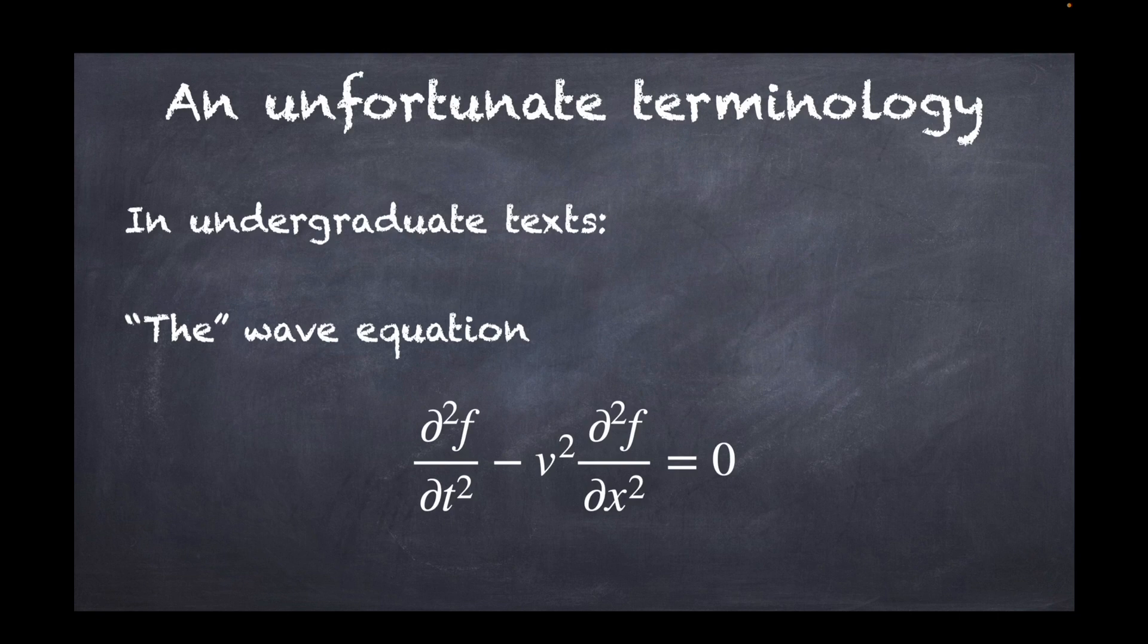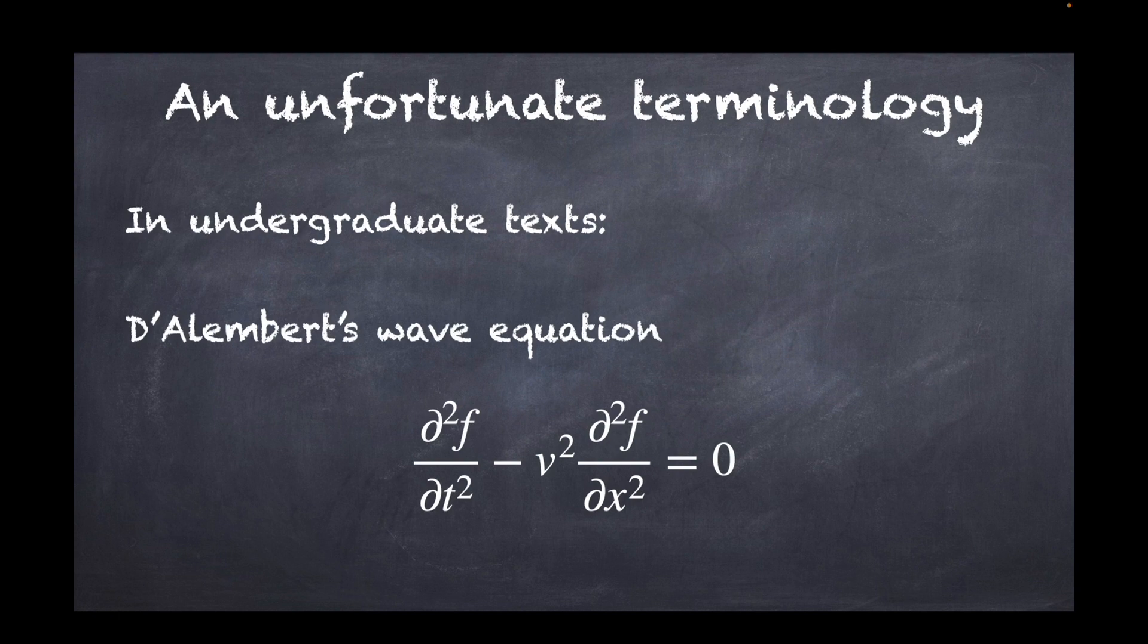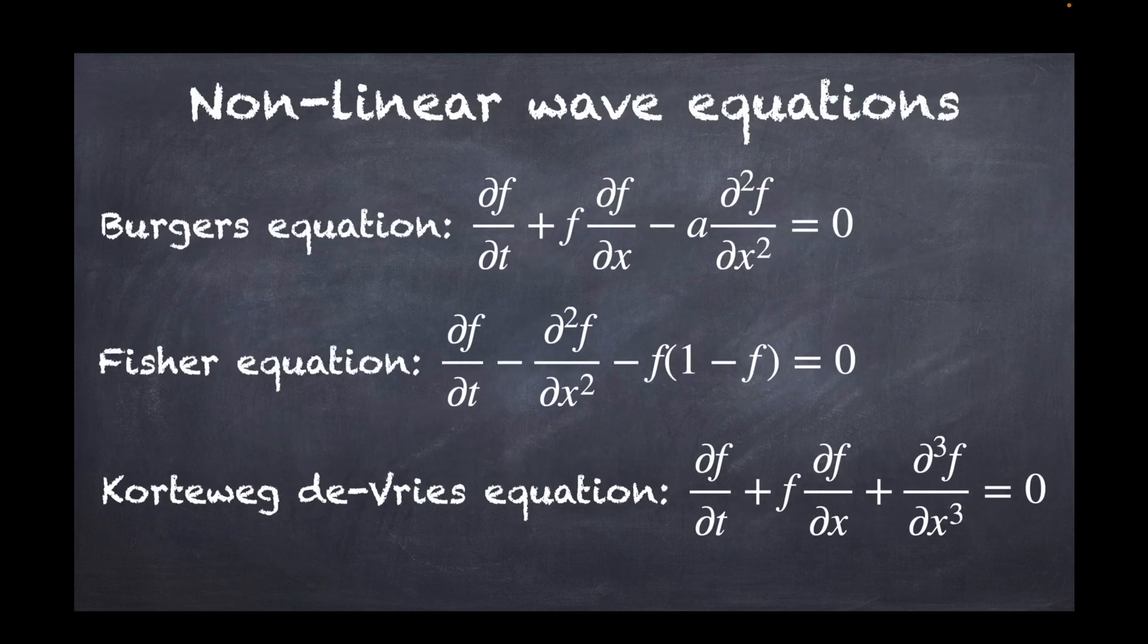Now the problem that I have is that by calling that the wave equation, we make a big mistake, because this is just one of many. In particular, d'Alembert's wave equation or the linear wave equation, there are plenty of other wave equations in physics. Here I just mentioned three of them: Burgers equation, Fischer equation, and the Korteweg-de Vries equation. You will notice that all of these have a first order time derivative. They don't need a second order time derivative to be actual wave equations. On top of this, they are all classical equations. They all exist within the field of classical physics, mostly nonlinear optics, continuum mechanics, and fluid dynamics.